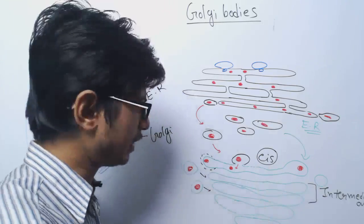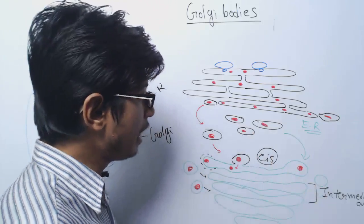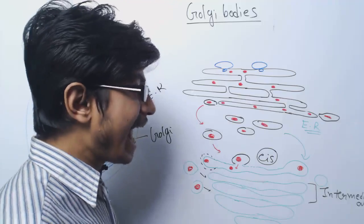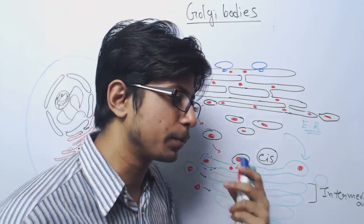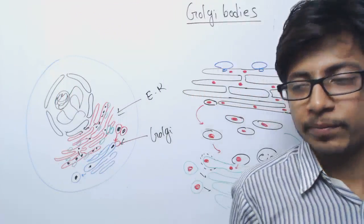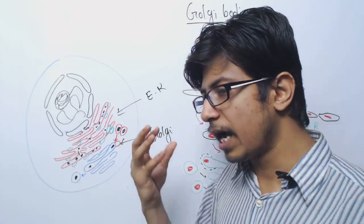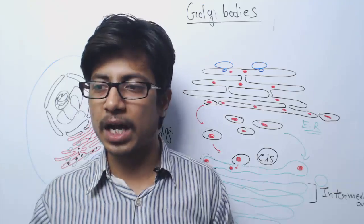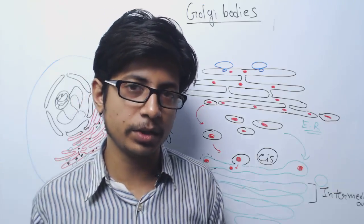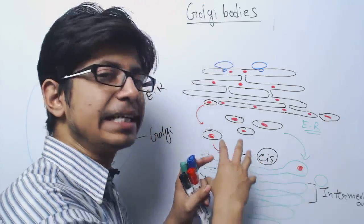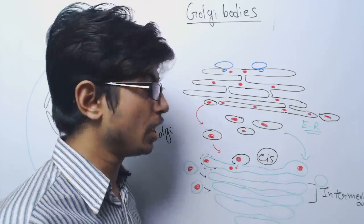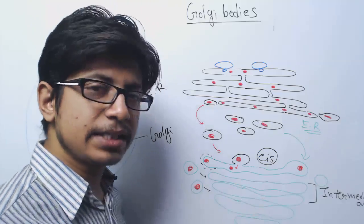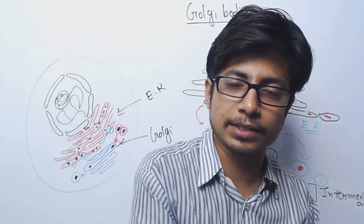Throughout all of this Golgi apparatus, chemical modifications continuously take place. These include post-translational modifications as well as sorting of the proteins. Golgi apparatus can be visualized as a cargo delivery system — a centralized delivery system inside the cell — where it receives many different cargos destined for different regions inside the cell.